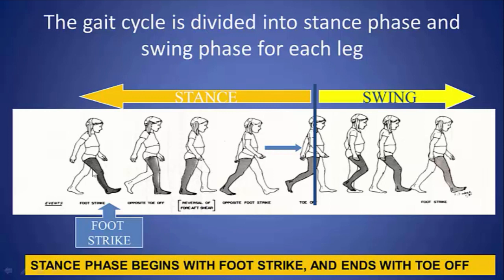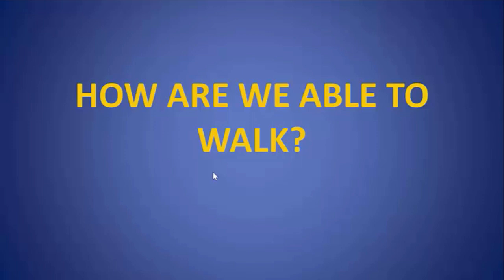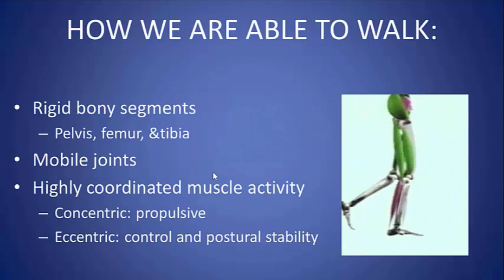The gait cycle always begins with foot strike, where the foot hits the ground. Usually in normal gait this will be the heel, but in pathologic situations it might be the toe or the entire foot. As you progress forward on the planted limb, that is stance phase. When the foot lifts up off the ground, that's known as toe off — the differentiation between stance phase and swing phase, where the limb swings forward to position itself to accept weight for the next step.